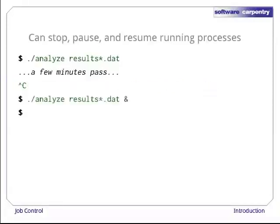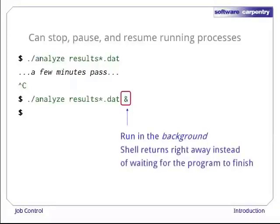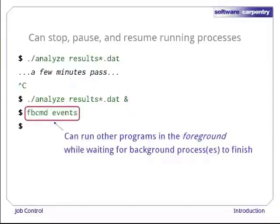Let's run that same command again, with an ampersand at the end of the line, to tell the shell we want it to run in the background. When we do this, the shell launches the program as before. Instead of leaving our keyboard and screen connected to the program's standard input and output, though, the shell hangs on to them. This means the shell can give us a fresh command prompt and start running other commands right away. Here, for example, we're checking for new Facebook events.